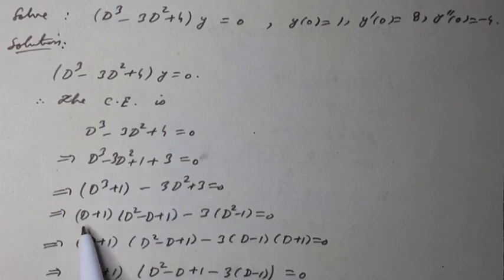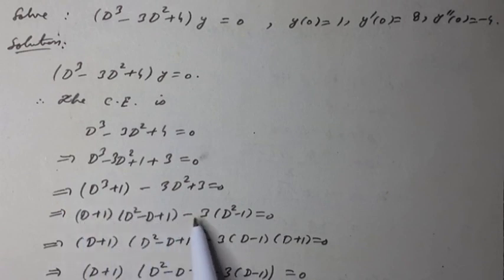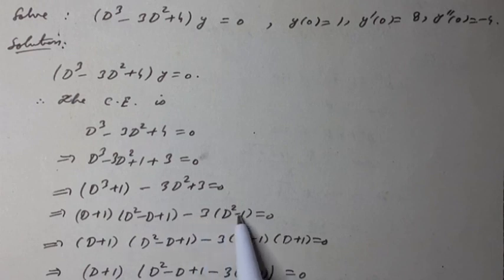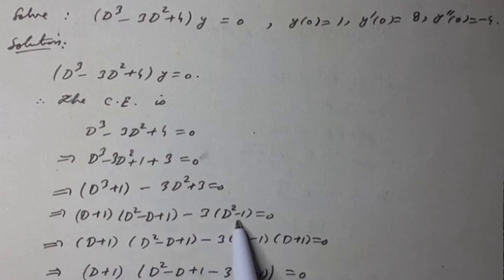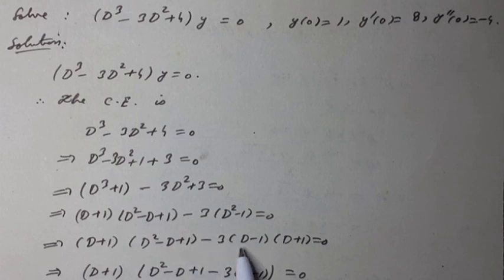According to the sum of cubes formula, this can be written as (D + 1)(D² - D + 1) minus 3(D² - 1) = 0. Using the difference of squares formula, it becomes (D + 1)(D² - D + 1) minus 3(D - 1)(D + 1) = 0.